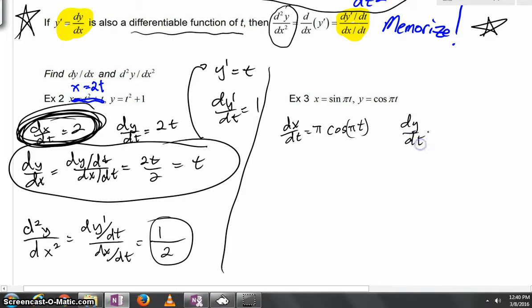dy dt, well, the derivative of cosine is negative sine, but we're going to use the chain rule once again. So we'll get negative sine of pi t.